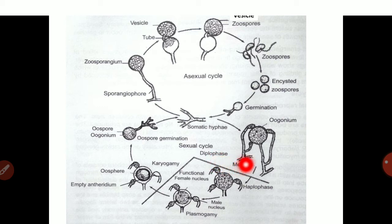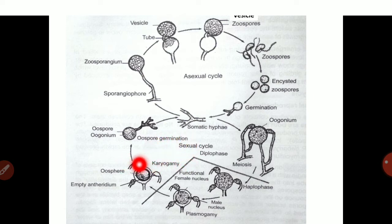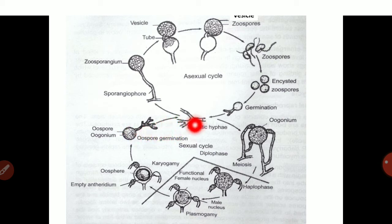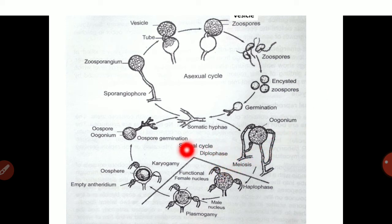One functional antheridial nucleus and one functional female nucleus fuse together to produce the zygote; that is karyogamy. The zygote acts as the oospore. The oospore germinates under favorable conditions and produces the hypha. When the season is favorable, the asexual cycle continues; when unfavorable, the sexual cycle occurs forming the oospore. The haplophase is when haploid nuclei are present; the diplophase is when the zygote (diploid nucleus) is present.